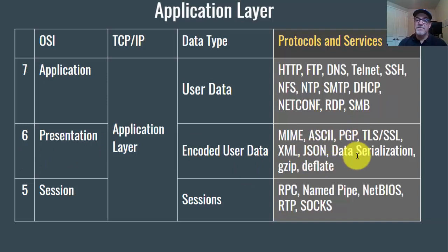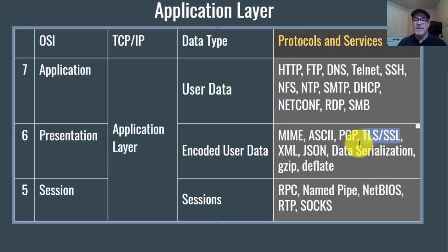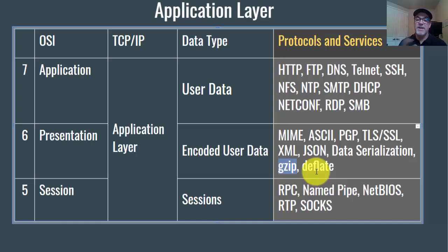At the presentation layer, we're talking about how data can be presented. In email, MIME types allow different file types to be sent. Other examples include ASCII text, Pretty Good Privacy (PGP) used for email encryption, Transport Layer Security (TLS) and Secure Socket Layer (SSL) for setting up secure encrypted connections, XML or JSON as data serialization formats, and GZIP or Deflate for compression — often used when requesting web pages in a compressed format to speed up browsing.